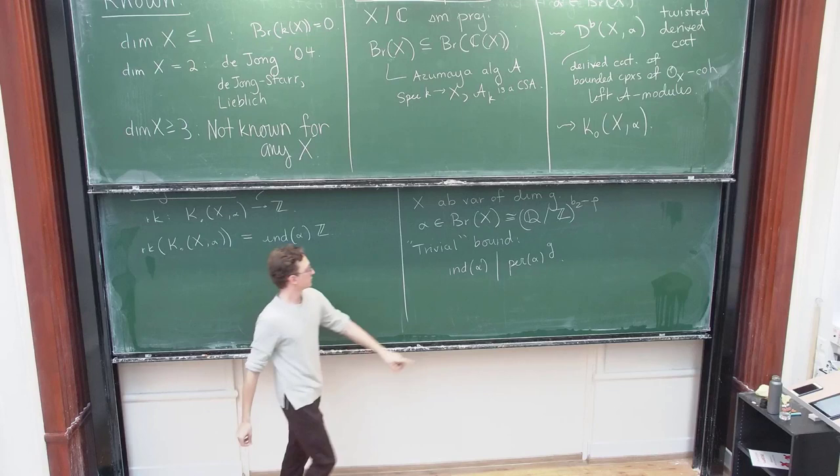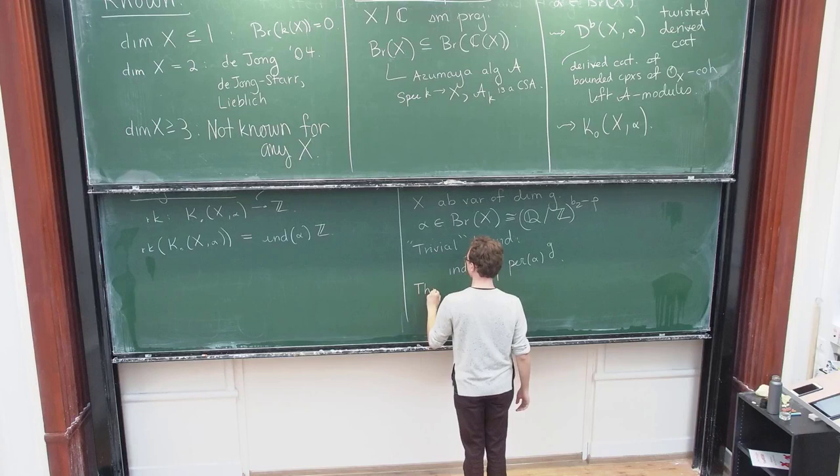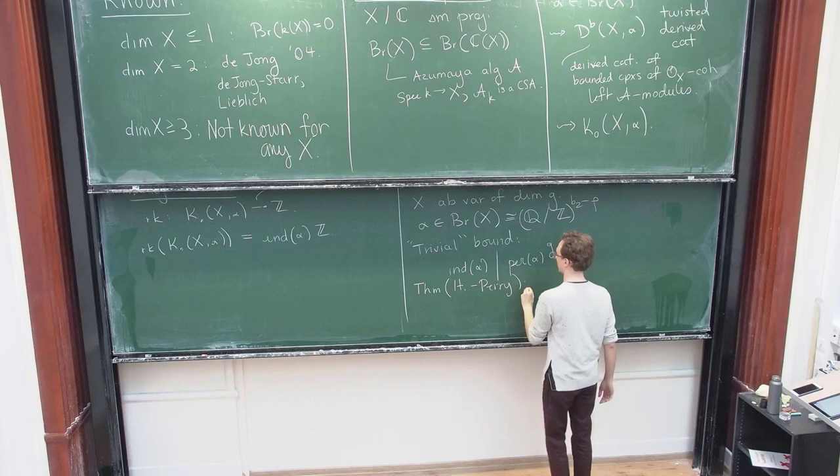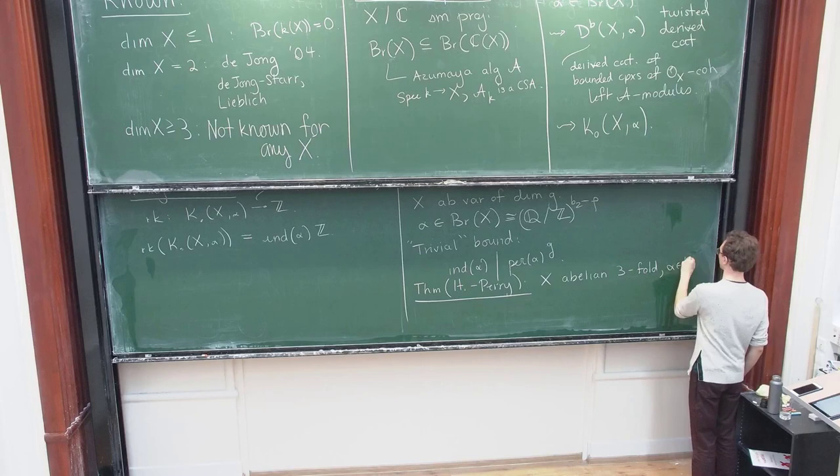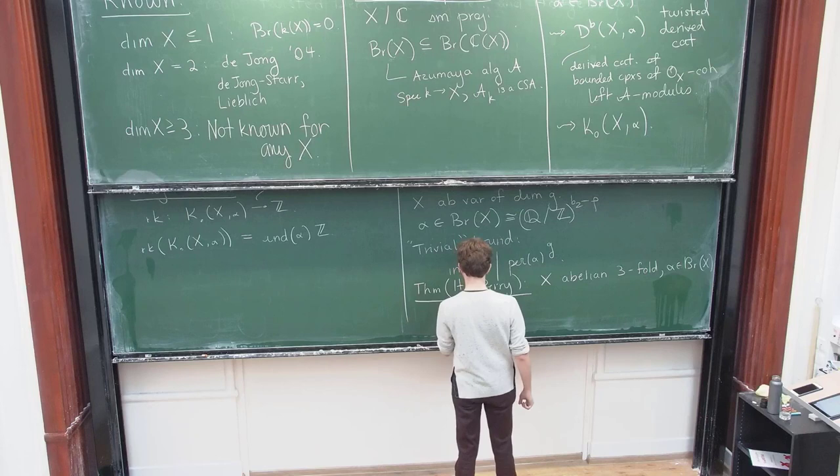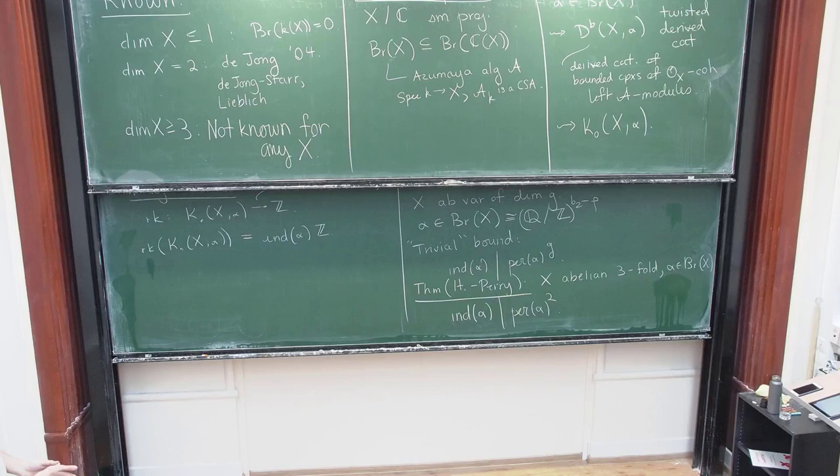It turns out that the index in this setting always divides the period to the dimension. This isn't, let me, for the sake of time, let me not prove it. But it's just a computation with cohomology. It's very straightforward. And so what's not obvious, however, is that you can lower this to dimension minus one, which is the conjecture, right? That's the goal. So what I want to say in the last few minutes of the talk is I want to tell you about a theorem, which is joint with Alex Perry, which says the following: if X is an abelian threefold, and alpha is any Brouwer class, then in fact, we have the conjecture. The index of alpha divides the period of alpha. In this case, the conjecture says squared.